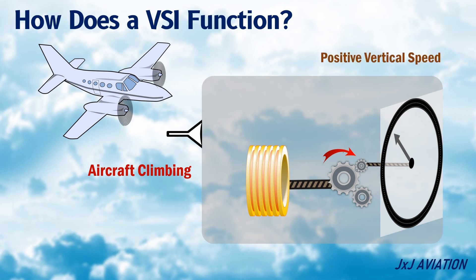The pressure in the case will also gradually decrease because of the air leaving through the calibrated nozzle. This provides a stable indication of the vertical speed. The vertical speed indication also depends on the pressure difference between the capsule and the case.